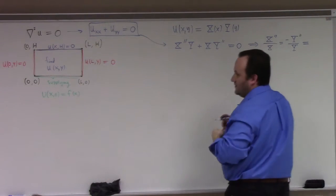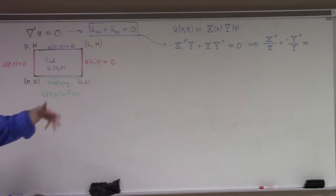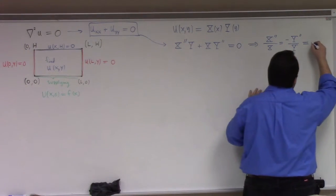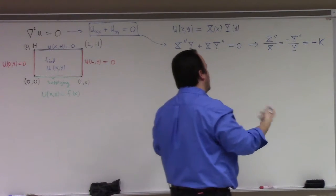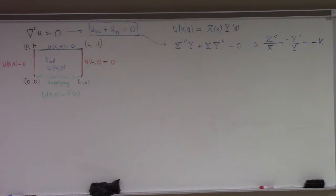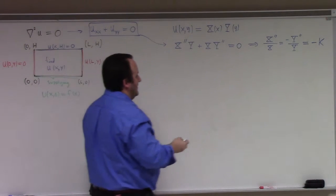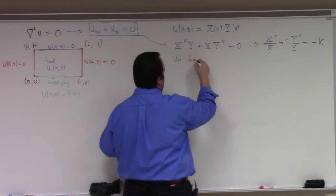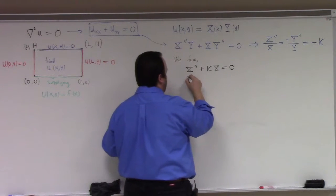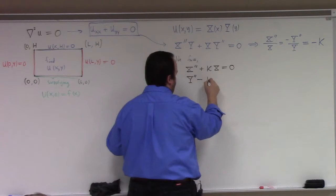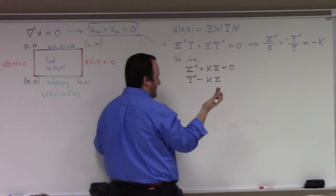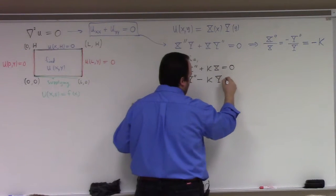Function of x on one side, function of Y on the other — so it must be a constant. I'm going to make that constant minus K. So we face X prime prime plus K X equals 0, and Y prime prime minus K Y equals 0. These are two related but different second-order ODEs for the x and y functions respectively.